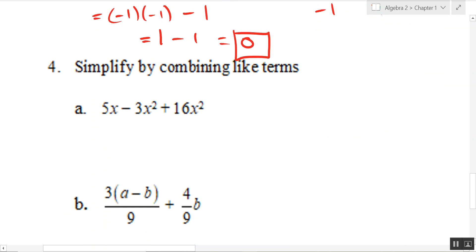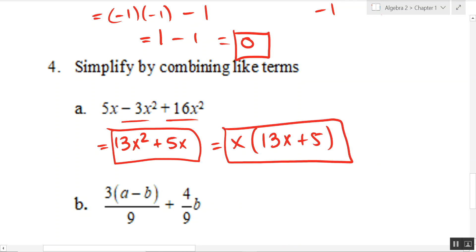All right, lastly we're simply combining like terms here. I'm going to write this in descending order of exponents, meaning the highest exponents first. Looking at my x squared terms, 16 minus 3 would be 13 x squareds. And then I have 5 x's. That is my expression. If you want to factor, I think that is a good thing. Again, both of these have an x in common, and that would be a great final answer.